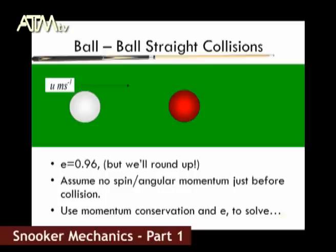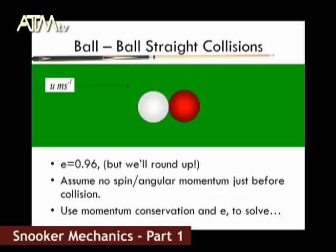Let's have a look at a straight-on collision between ball and ball. We have a white cue ball which has an initial velocity of U meters per second, heading straight on towards a stationary object ball. The E value between the balls is 0.96, but for simplicity we will round up. We will also assume that there is no spin whatsoever just before the impact. If we use the conservation of momentum and the coefficient of restitution, we can obtain two simultaneous equations to solve the velocities after the impact.